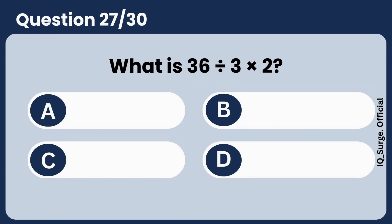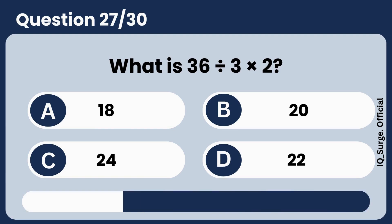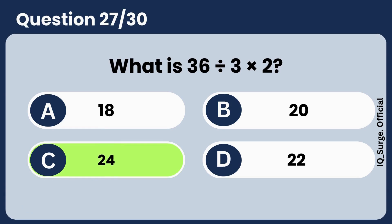What is 36 divided by 3 times 2? Answer C, 24.